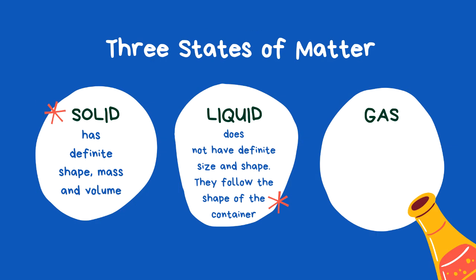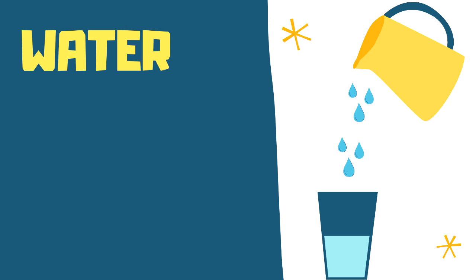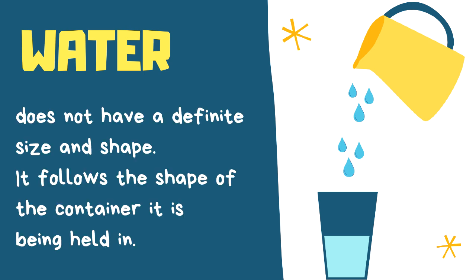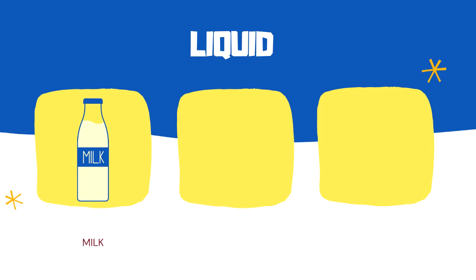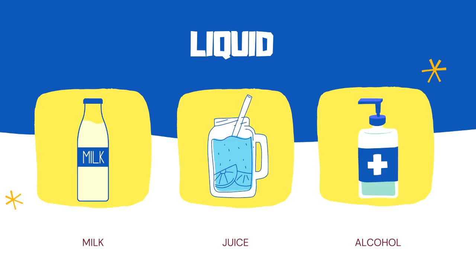Liquids, on the other hand, do not have definite size and shape — they follow the shape of the container. Everything we drink is in its liquid state. Take water for example: water does not have a definite size and shape; it follows the shape of the container it is being held in. Other examples of liquid include milk, juice, and alcohol.